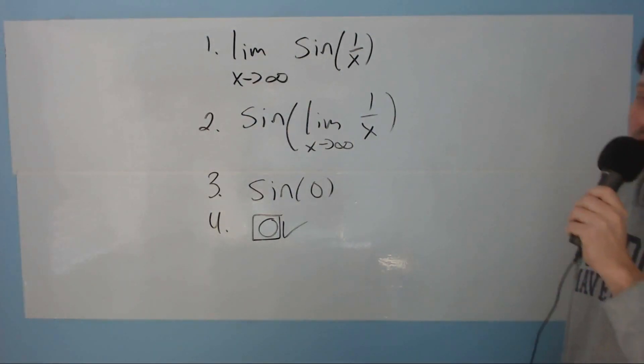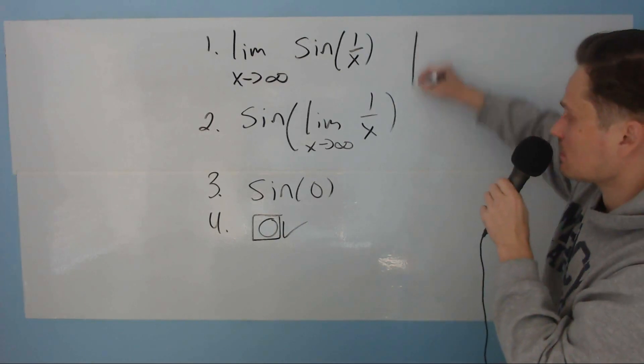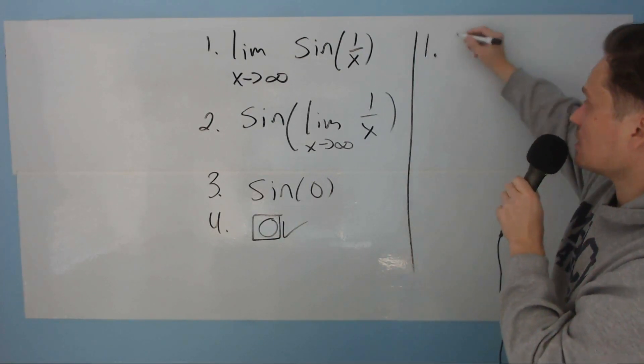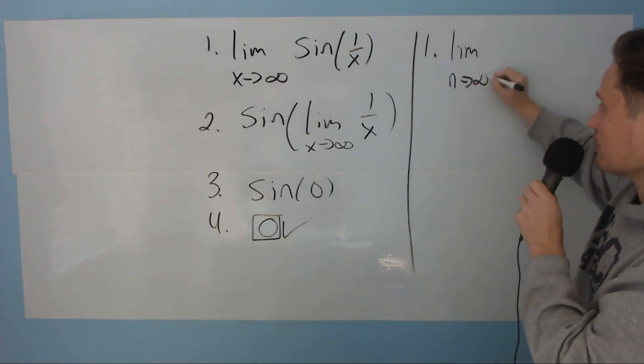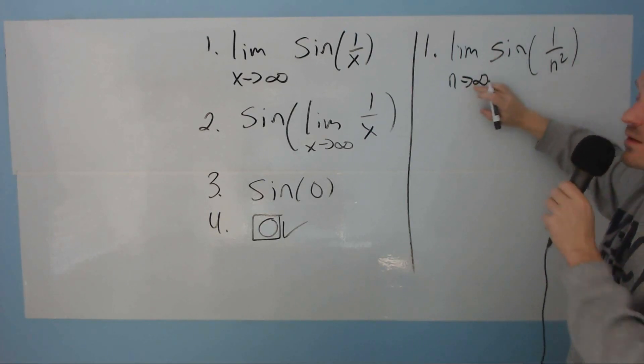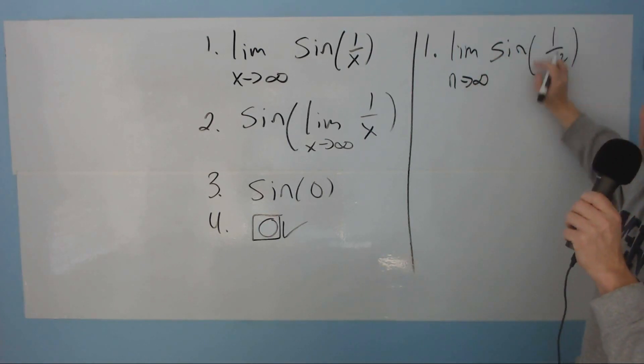So now let's take a look at another example that involves this. You really should pause the video and try it on your own. Let me just write it down because it functions very similarly. So imagine it looks like this. The limit as n goes to positive infinity of sine of 1 over n squared.